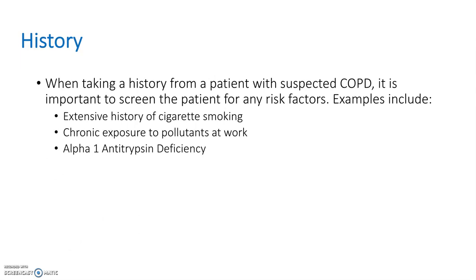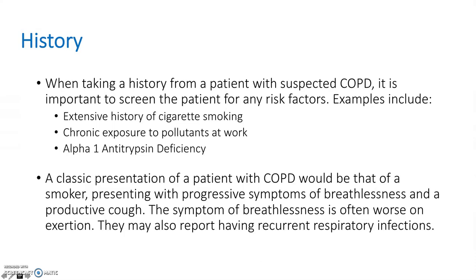When taking a history it's really important to screen the patient for any risk factors. Examples include an extensive history of cigarette smoking, as it's very common that a patient with COPD was a previous or is still currently a smoker. You also want to check for any exposure to pollutants at work over long periods of time, and also alpha-1 antitrypsin deficiency. The classic presentation would be a smoker presenting with progressive respiratory symptoms such as breathlessness and a productive cough, which may be worse on exertion, with frequent infections.